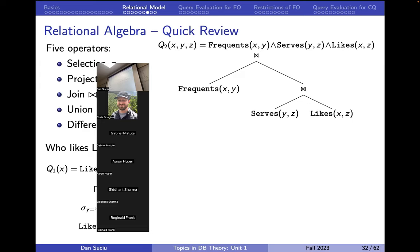Quick question: imagine an arbitrary join where each table has n tuples — how big can the result be? It can be at most n squared, because the join compares all combinations of tuples from the two tables. There might be a condition that can be empty — every tuple matches every tuple — or it can be as small as empty, anything in between. In this case, the condition is that the beer from one table must be the same as the beer from the other. So the result can never be bigger than n squared.